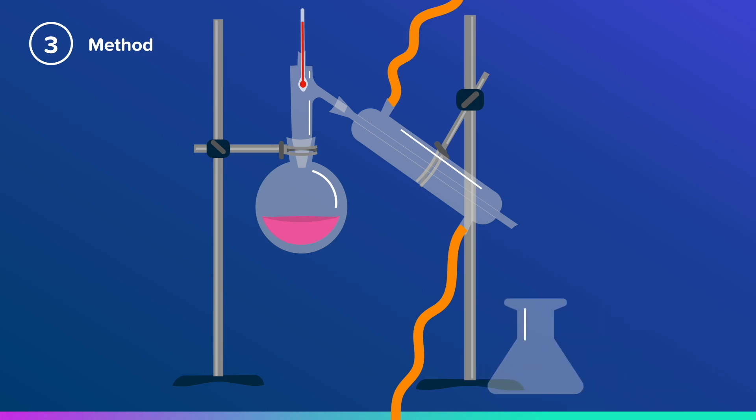Next, place a conical flask under the end of the condenser. Your liquid should be able to drip from the condenser into the conical flask. Really make sure it's underneath. Then you'll need a Bunsen burner, and it should be able to move under the round-bottomed flask.